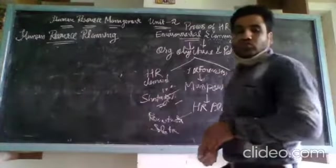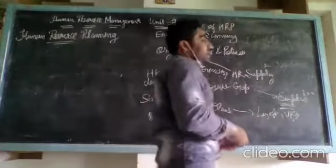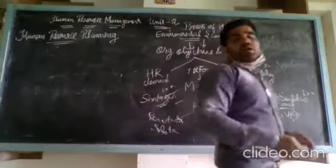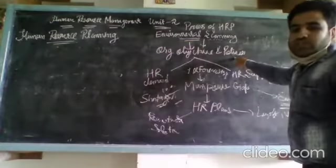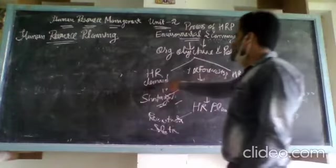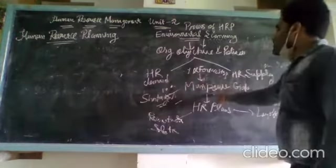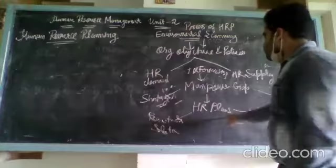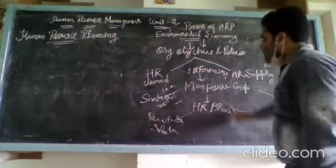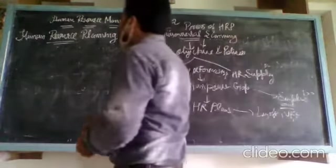So this is the process of human resource planning: environmental scanning, then organizational objectives and policies, then HR forecasting covering demand and supply, then the manpower gap identifying shortage and surplus, and finally formulating the HR plans including recruitment, selection, and other HR functions.